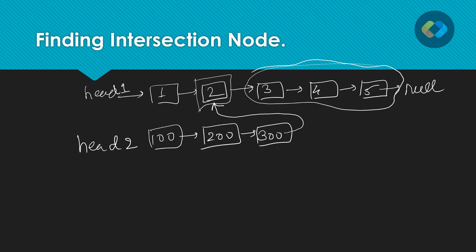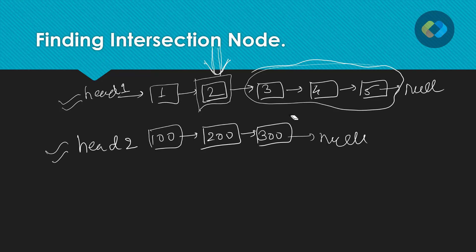After that, they both are pointing to the same number of nodes. We will be given the heads of these two linked lists as input, and they might be intersecting in this fashion or they might not be intersecting — they could be two different individual linked lists. What we have to do is, if these linked lists are intersecting, we have to find this intersecting node and return it. We have to identify the node at which these two linked lists are being intersected, or we could be asked to remove this link and make them separate again.